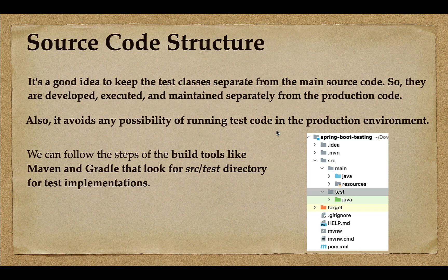The first best practice is source code structure. It is a good idea to keep the test classes separate from the main source code, so they are developed, executed, and maintained separately from the production code. This will avoid any possibility of running test code in the production environment. We have build tools in Java like Maven or Gradle, and we can use these build tools' standard project structure to keep the test classes separate.